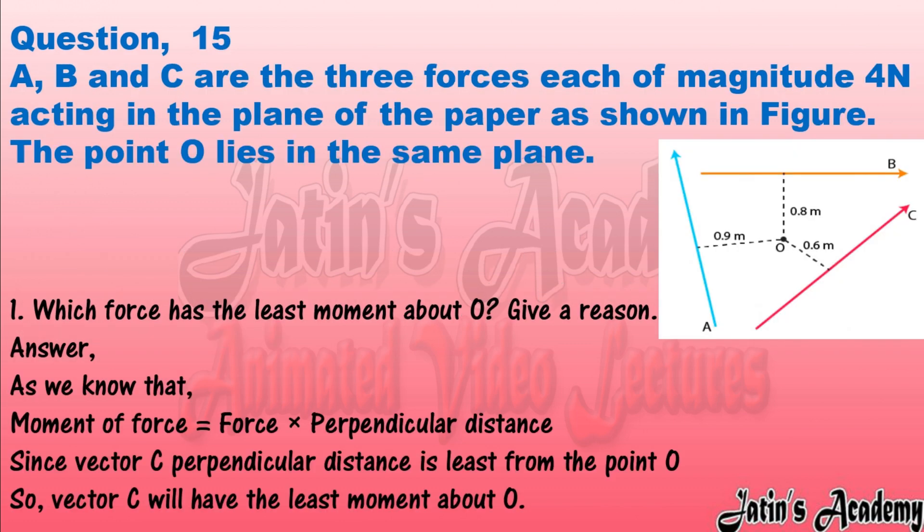Question fifteen: A, B and C are three forces each of magnitude 4 N acting in the plane of the paper. The point O lies in the same plane. Part 1: which force has the least moment about O? Answer: since moment of force equals force times perpendicular distance, and vector C has the least perpendicular distance from point O, vector C will have the least moment about O.